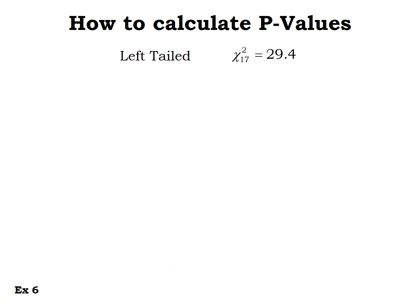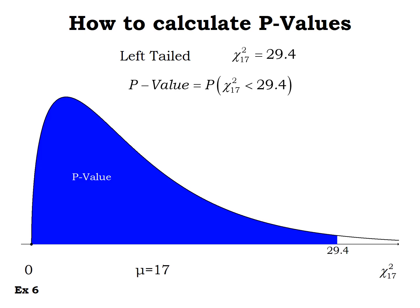Now with a large chi-squared score of 29.4 and 17 degrees of freedom, for a left-tailed test, the p-value is the area to the left of the test statistic. With a mean of 17, 29.4 is way out in the right tail. Using chi-squared CDF from 0 to 29.4 with 17 degrees of freedom, the p-value is roughly 0.9690.